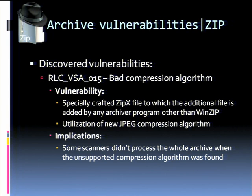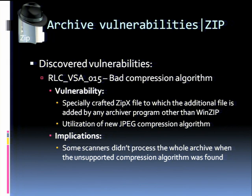The next vulnerability relates to a bad compression algorithm — but not really bad. A specially crafted zipx file, introduced in zip version 12, has a new compression method for JPEG files. If you compress a single JPEG image with this new zipx version, then rename the file to zip and use any other tool to add another file inside that archive, you still have a valid zip file because all the headers are compatible between the formats.